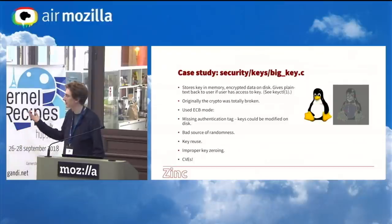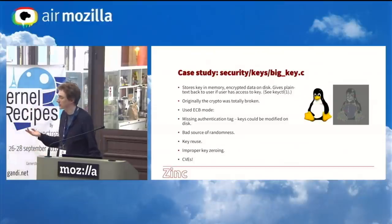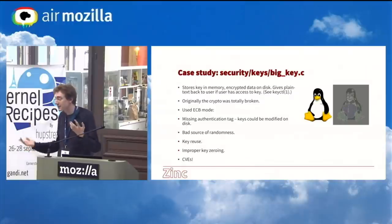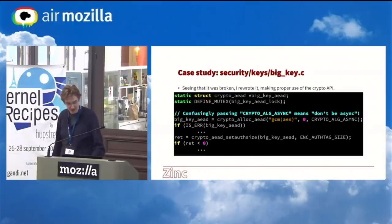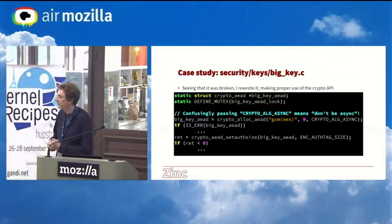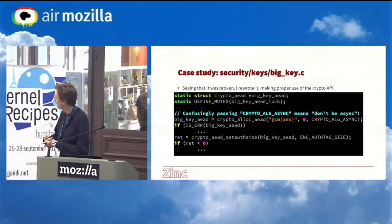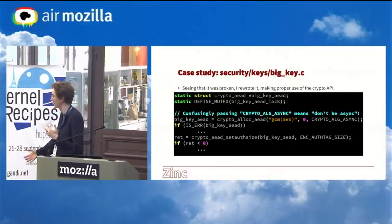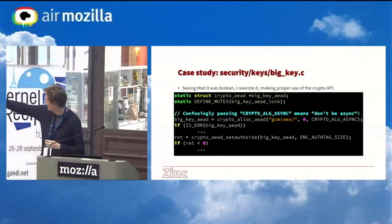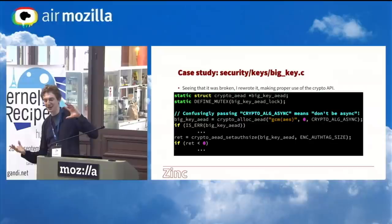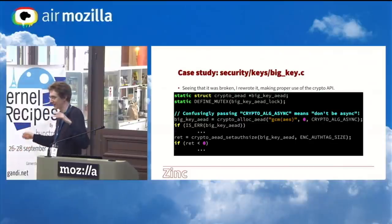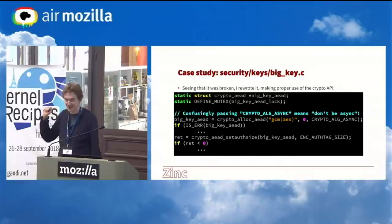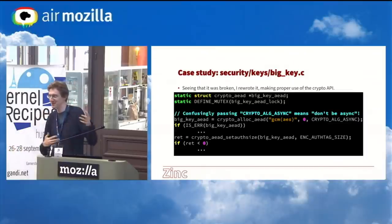I thought I'd rewrite this using the kernel crypto API in the proper way. Maybe experience doing that would transfer to WireGuard. The first thing you have to do with the old crypto API is allocate an instance of a cipher object that gives you access to the underlying algorithms. You pass it this crazy string — we want AES-GCM — but they've got their own domain-specific language for specifying arbitrarily complex constructions of ciphers. You pass in async to indicate you don't want it to be async, because it's actually a mask. This is terrible.